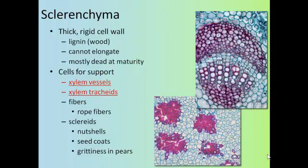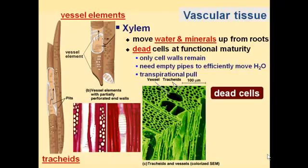Now let's focus on vascular tissue. There are two kinds: xylem and phloem. The job of xylem is to move the water and minerals up from the soil to the rest of the plant. Xylem cells are actually dead at maturity — when the xylem cell reaches full size, it kills itself and spits out everything except the cell wall, leaving the maximum amount of space to transport water. It kind of turns itself into a giant straw or piece of PVC pipe. Xylem cells are also referred to as tracheids or vessel elements.